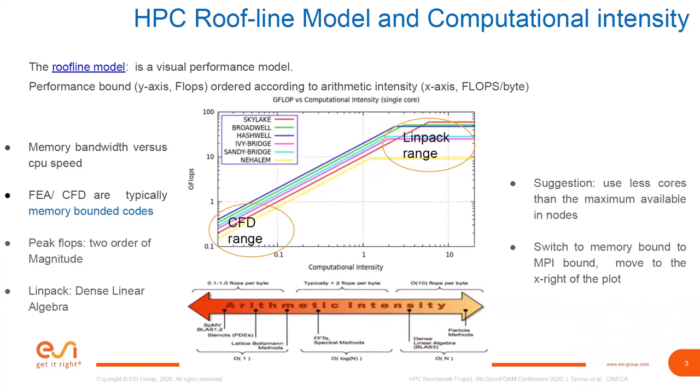I want to show only this graph — the so-called roofline model. That's a very well-known graph to measure the performance of actual code. On the x-axis you have the computational intensity; on the y-axis you have the performance in GFlop/s. The graphs are logarithmic on both X and Y scales. You can see how new HPC systems are increasing performance in the last decade, moving to higher computational intensity and higher GFlop/s. I put here what was the 10–15 year improvement for the Intel family.